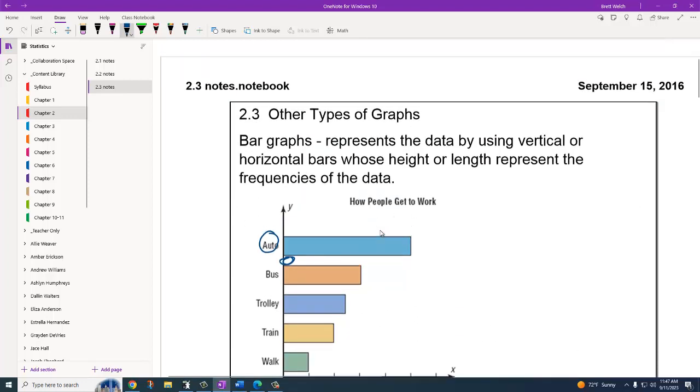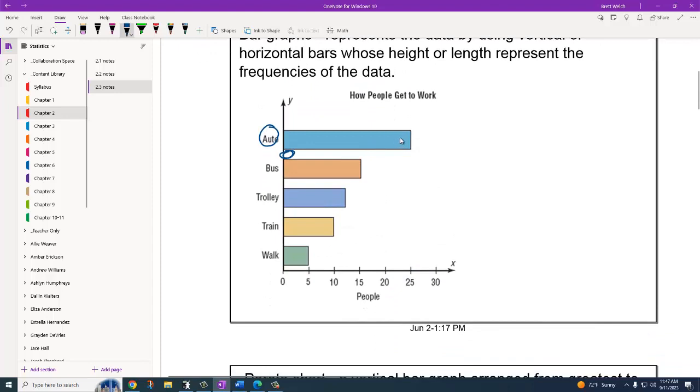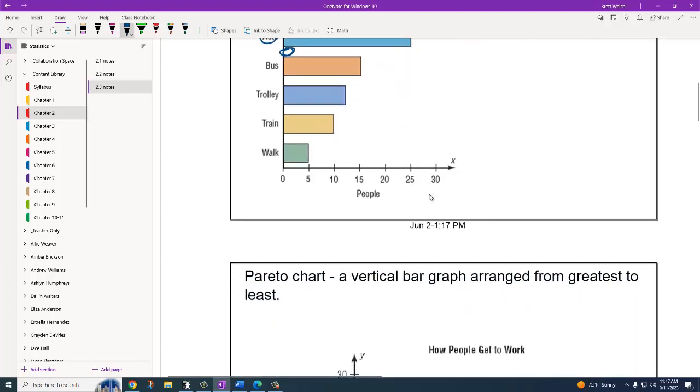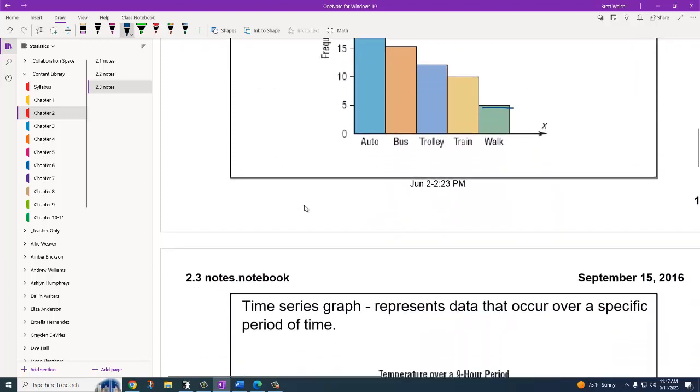You don't have to have, like up here, this happens to be from least to greatest from the top down. This did not have to be organized in a special way for a regular bar graph. But for it to be a Pareto, it does need to be organized.